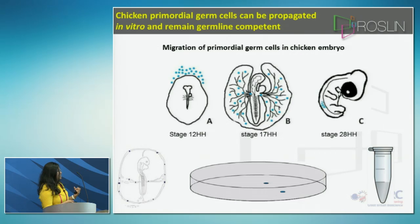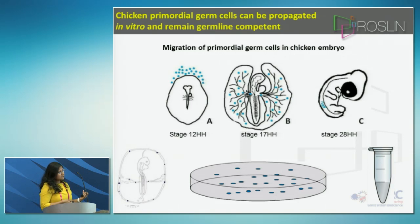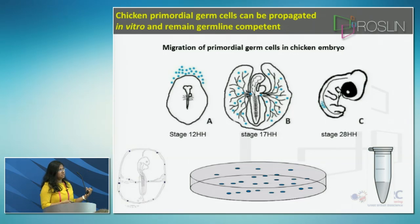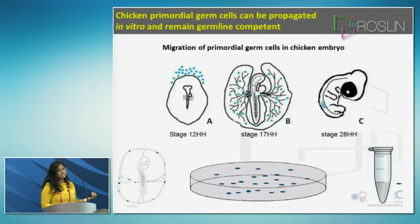At day 3 of the developing embryo, about 1 microliter of circulating blood containing primordial germ cells is removed. These cells are then grown in vitro in a cell culture media defined by Mike McGrew from our lab, which greatly proliferates the population. After growing them for about 4 weeks, these cells are cryopreserved using a routine technique.